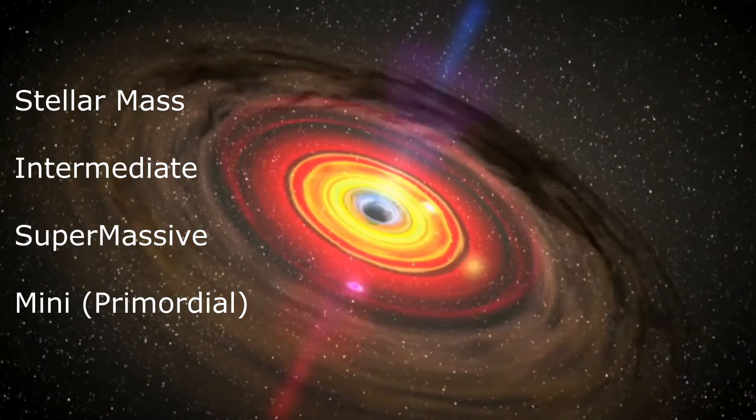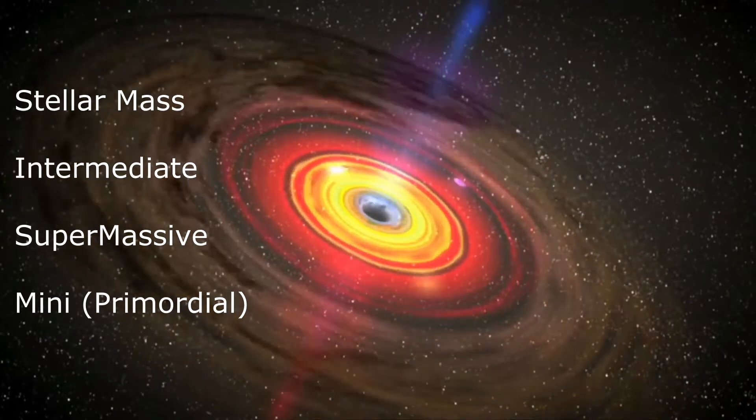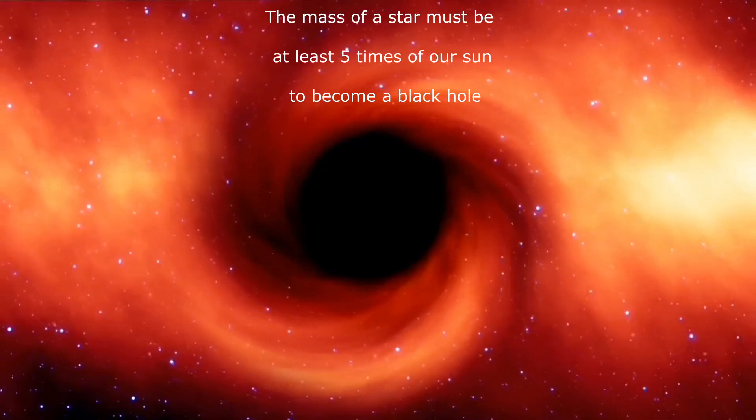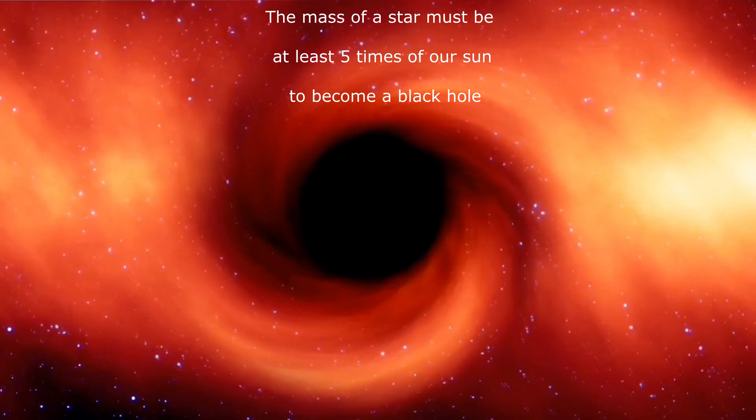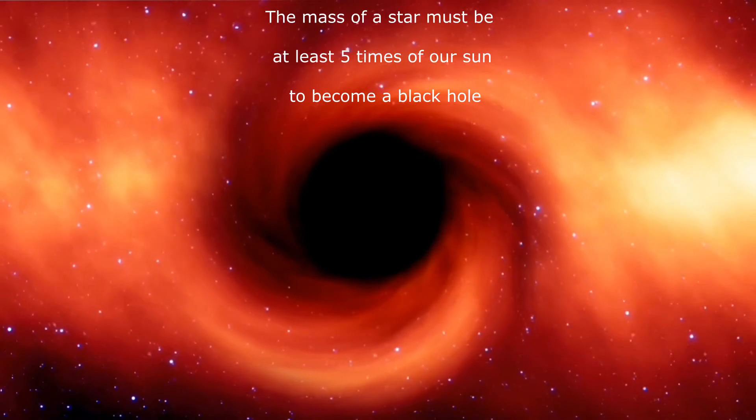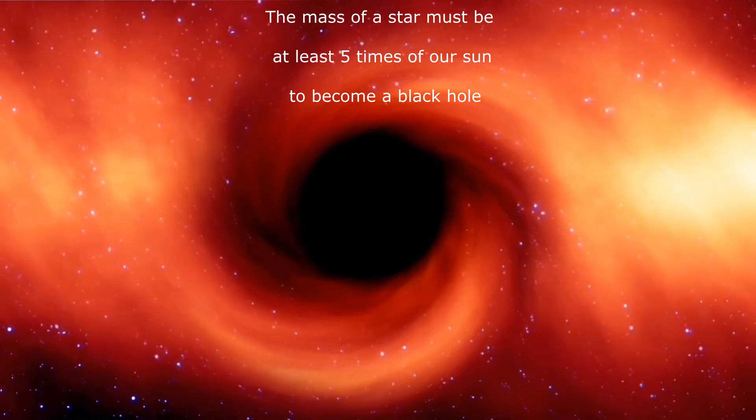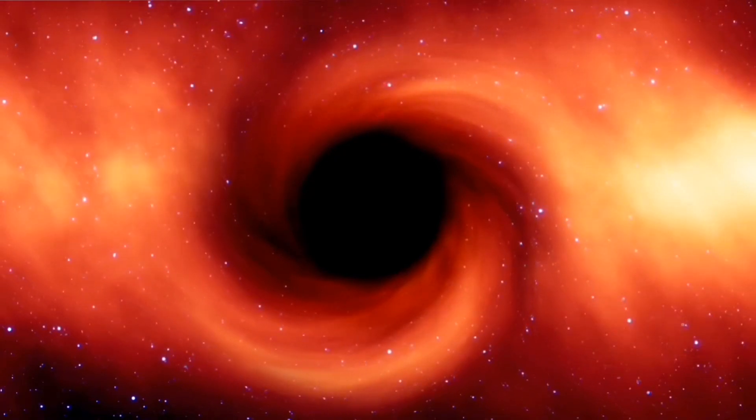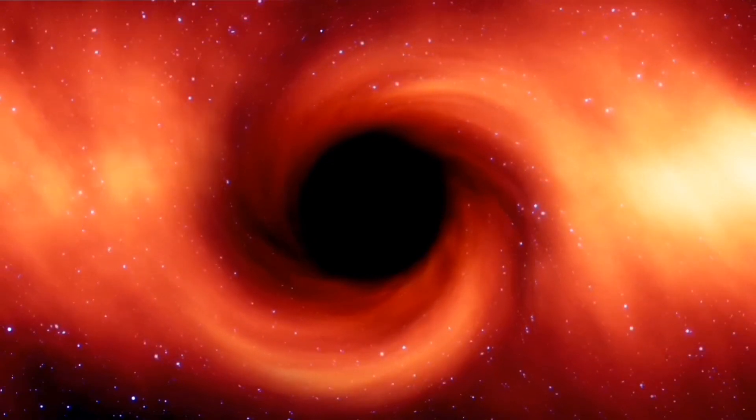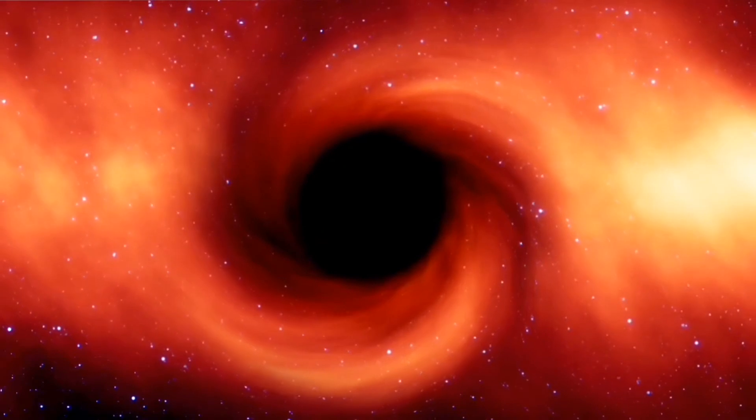The most commonly known way a black hole forms is by stellar death. When stars reach the ends of their lives, most will inflate, lose their mass, and then cool to form white dwarfs. But the largest of these, those at least 5 to 10 times as massive as our sun, are destined to become either superdense neutron stars or stellar mass black holes.